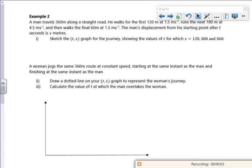A man travels 360 meters along a straight road. He walks the first 120 meters at 1.5 meters per second, runs the next 180 meters at 4.5 meters per second, and then walks the final 60 meters at 1.5 meters per second.